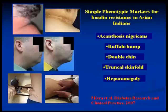Number two: a buffalo hump, which we always thought of as seen only in Cushing's, but it is described with insulin resistance. And a double chin.